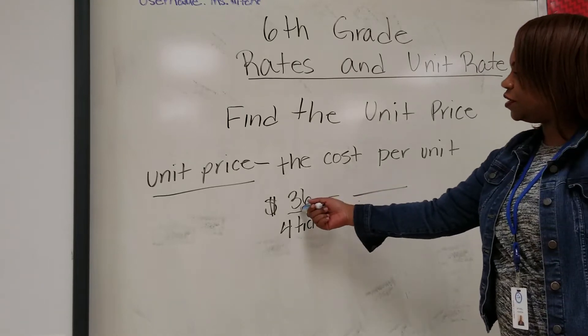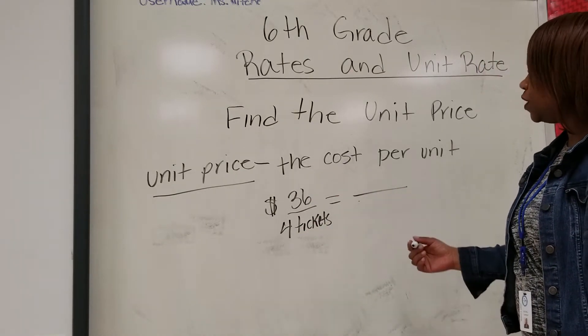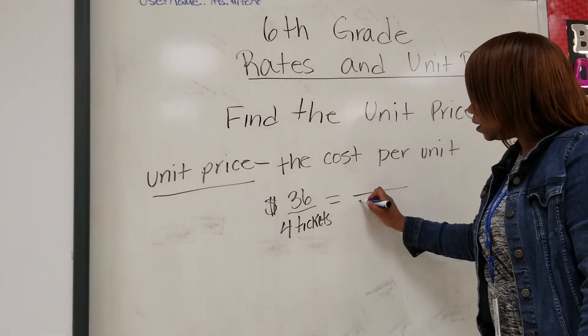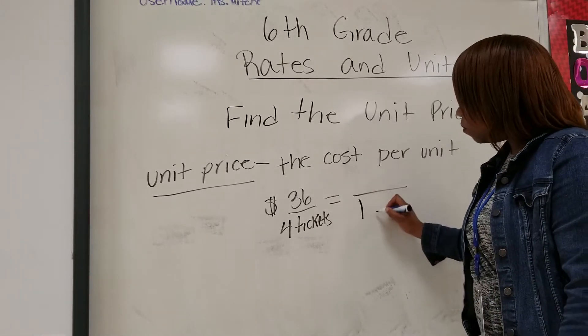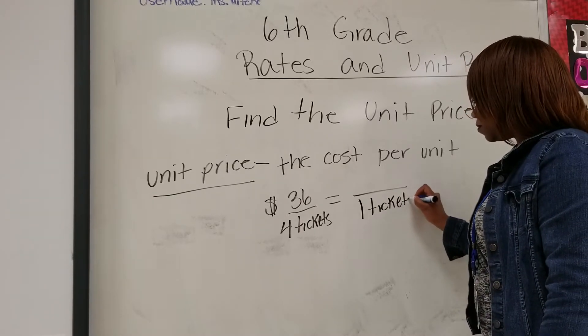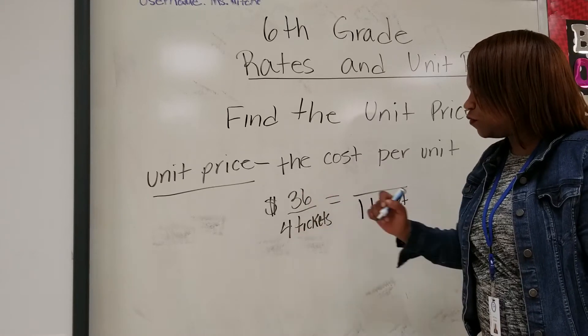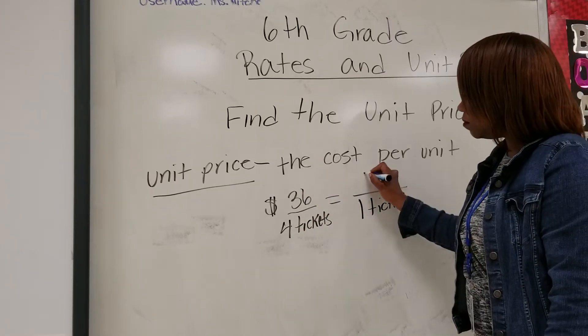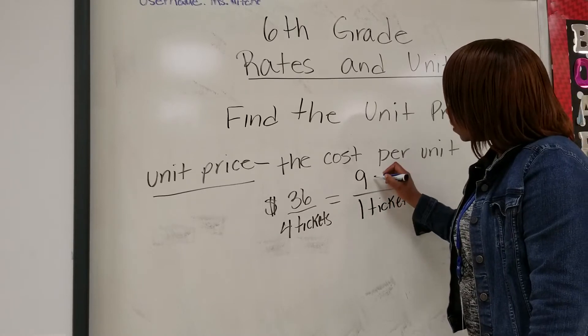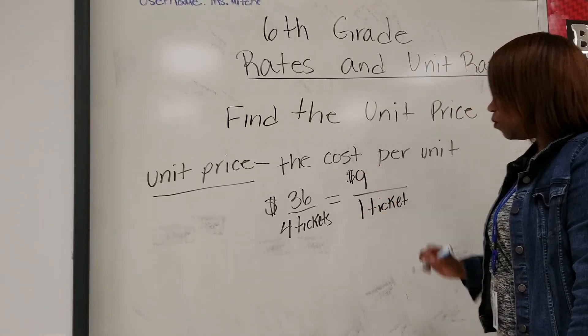Alright, here we have $36 for four tickets. So how much would it cost per one ticket? So by definition, one has to be the denominator, in this case one ticket. When we divide 36 by 4, we get 9. So therefore, it will be $9 per one ticket.